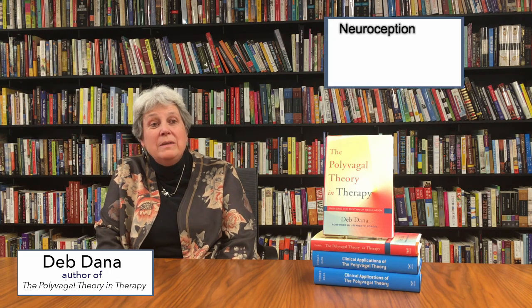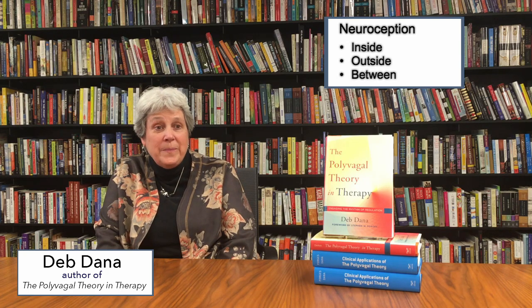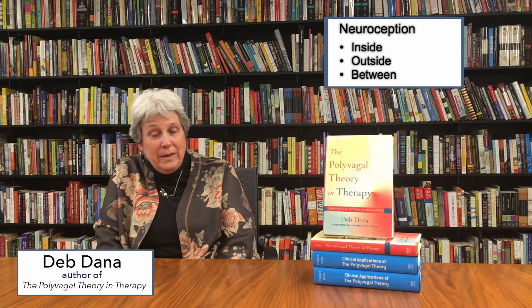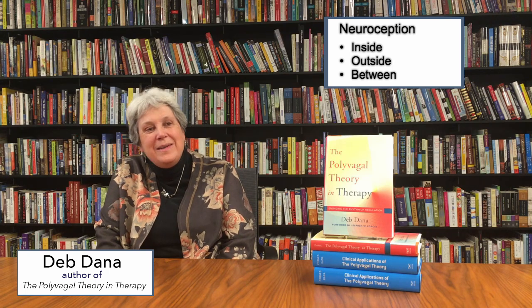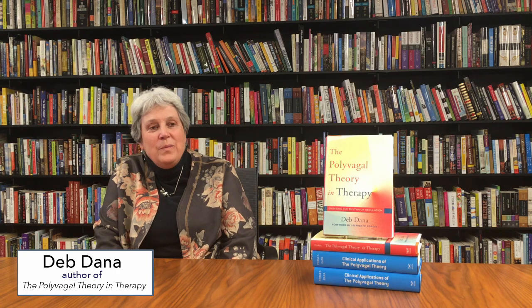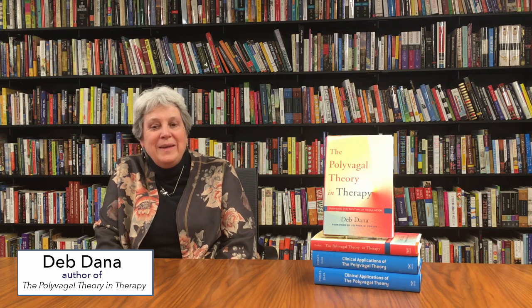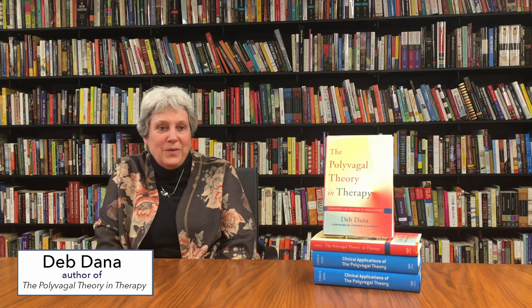Neuroception has three streams of information that it's always listening to — I just call it inside, outside, between. It's listening inside the body, it's listening outside in the environment, and it's listening between nervous systems. That information is coming into your nervous system every microsecond, and it's below the level of your thinking brain. So in order to do anything with neuroception, we have to bring perception to neuroception.